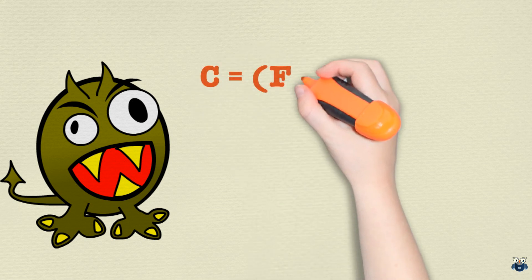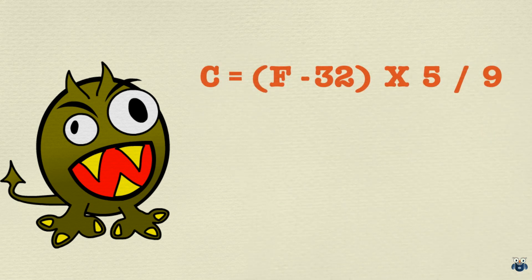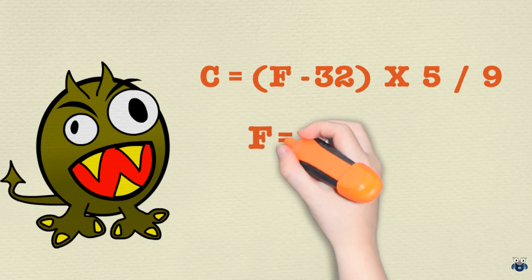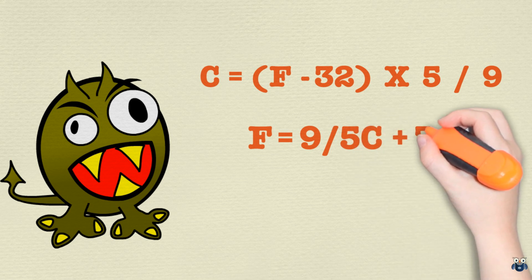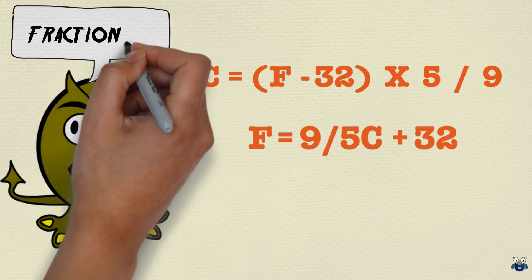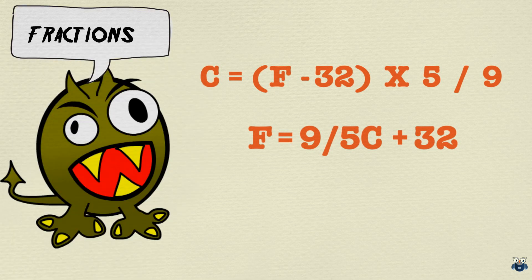C equal to F minus 32 into 5 by 9. Or F equal to 9 by 5 into C plus 32. This formula is great and yes it works, but it is not very easy to remember. Also, many learners find the fractions confusing.